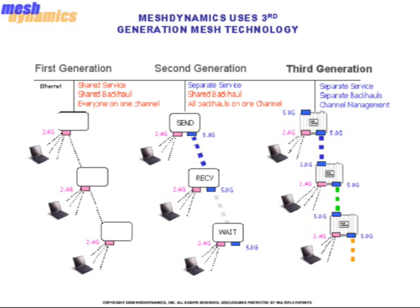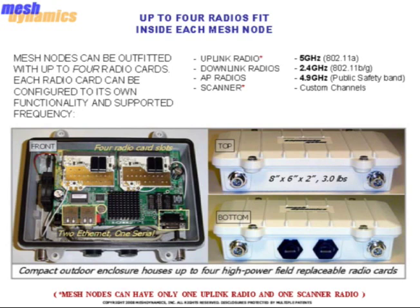Next, we move to modular mesh framework. The MD-4000 mesh node can be outfitted with up to four radio cards. Each radio card can be configured to its own functionality and supported frequency. Functionalities include uplink radio, downlink radios, AP radios, and scanners. Supported frequencies include 802.11a channels in the 5 GHz range, 802.11b/g channels in the 2.4 GHz range, the public safety band of 4.9 GHz, as well as custom channels created by the user based on center frequency and channel width.